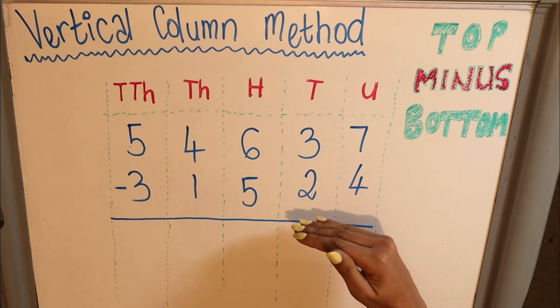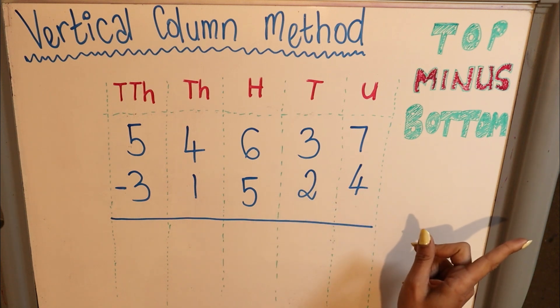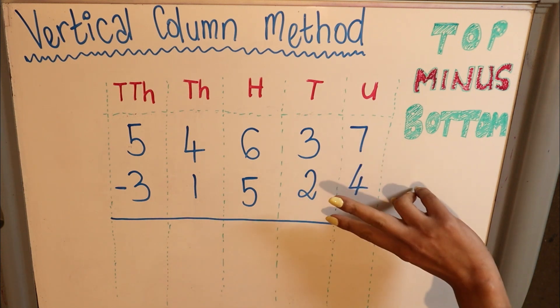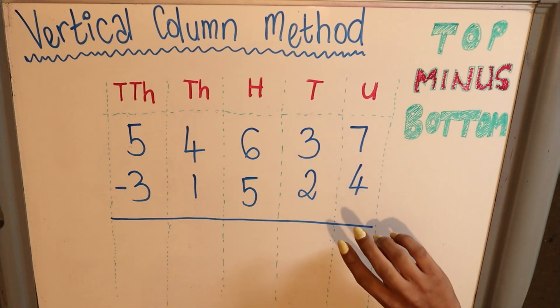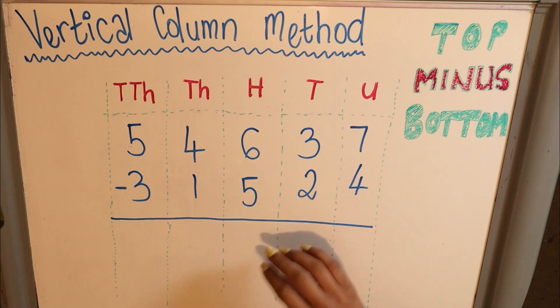Basically what this means is it's always going to be the top number minus the bottom number, starting from your right. This basically just means you can't turn the numbers around. But we'll look at examples when we are borrowing when you can't do that.